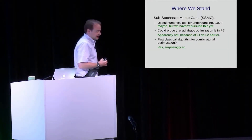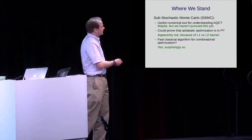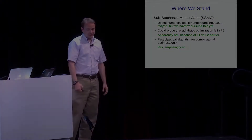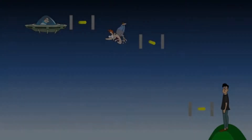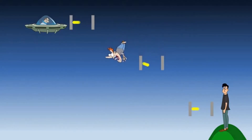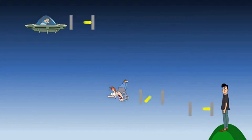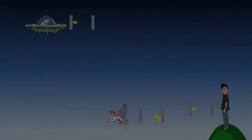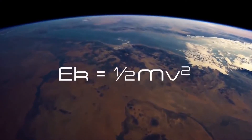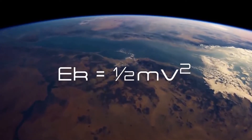Is proportional to psi rather than psi squared. Is proportional to the velocity of the falling man. Mass is directly proportional, but the velocity is squared.